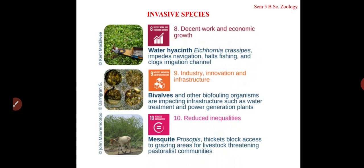Water hyacinth impacts navigation and clogs irrigation channels; if it decomposes altogether, the whole faunal composition of water bodies is affected. Bivalves and other biofouling organisms impact infrastructure — mussels grow on structures and erode them. Prosopis, a thorny shrubby plant, blocks access to grazing areas and affects grazing cattle.